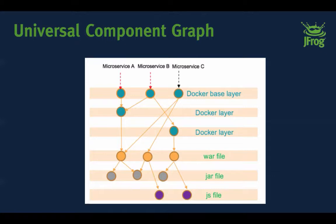As you can see on screen, a Docker base layer may be utilized by two other Docker layers. You'll have different component graphs for them, but each graph knows the relationships between all sub-components — JARs, WARs, Docker layers, JavaScript files, Node files, and so on. These component graphs collect this information and combine it to give you a really good insight into the structure each component has relative to others.